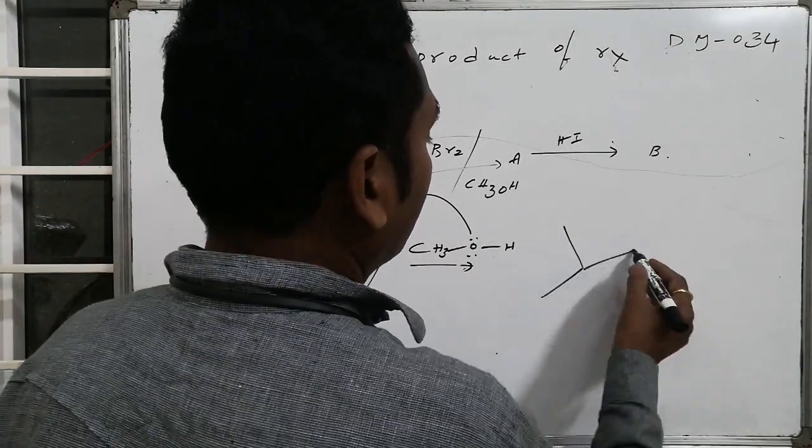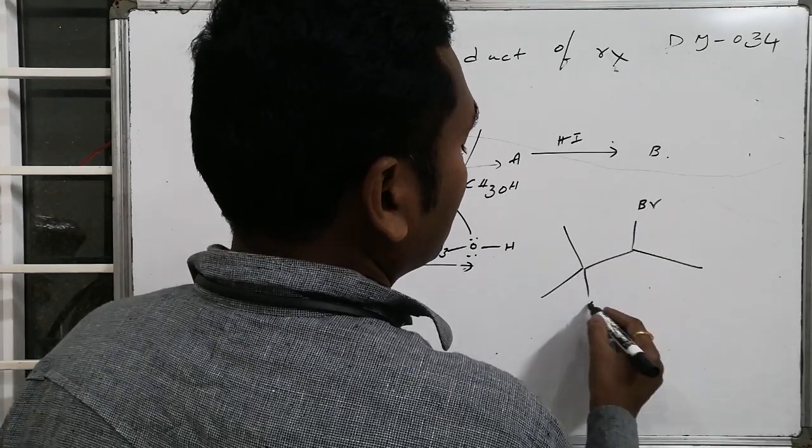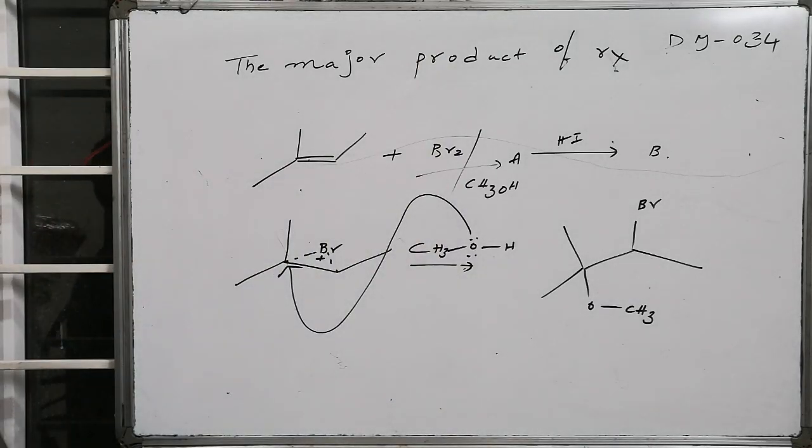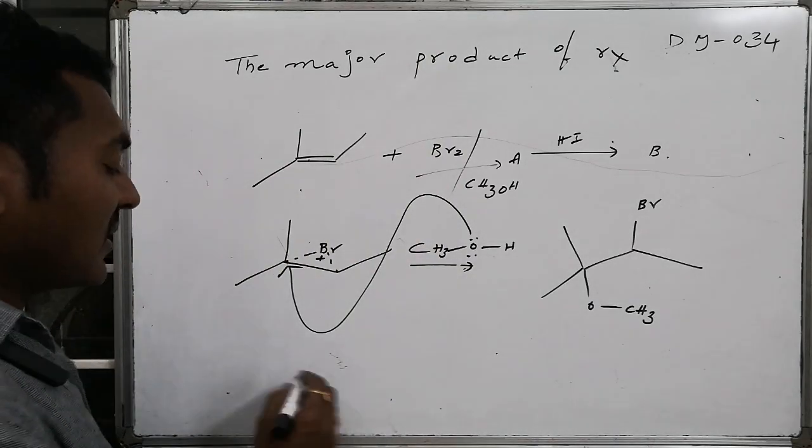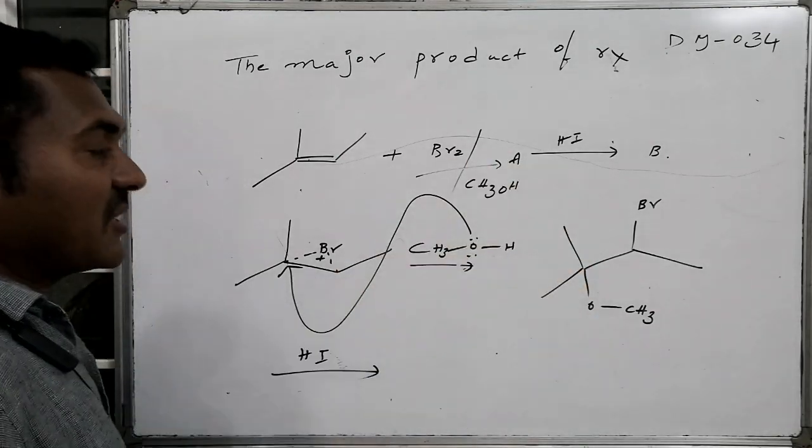As a result it is converted as like this: here it is converted as bromine, followed by this part is converted as methyl alcohol from where proton is eliminated to give methoxy group. Then from this, HI is attacked over the system in SN2 fashion.